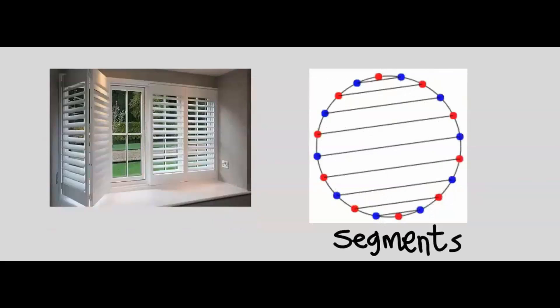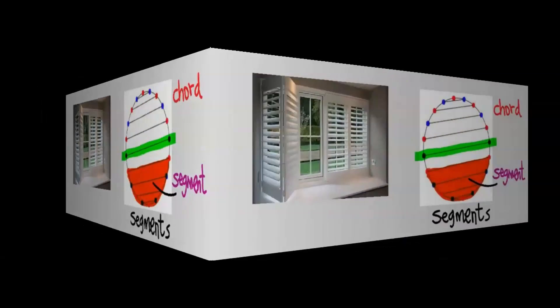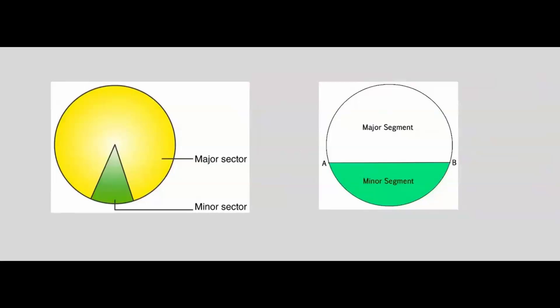A segment splits a circle horizontally like a window blind, except for the diameter. Every other line here is known as a chord. The shaded area within the chord is known as a segment. We have the major sector and the minor sector. Likewise, we have the major segment and the minor segment.